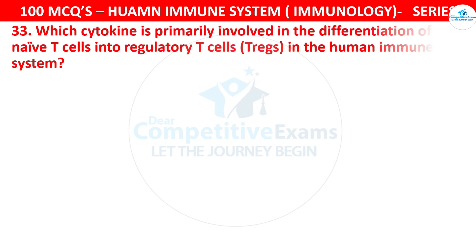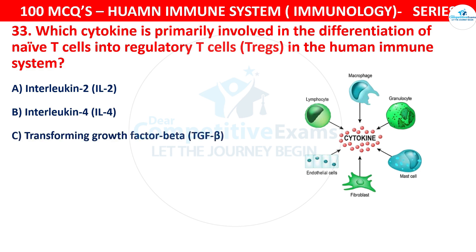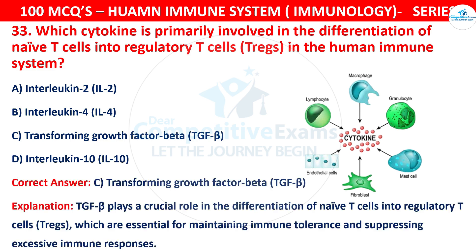Question 33: Which cytokine is primarily involved in the differentiation of naive T cells into Regulatory T cells in the human immune system? Your options are Interleukin-2, Interleukin-4, Transforming Growth Factor-Beta (TGF-β), or Interleukin-10. The correct answer is C, that is Transforming Growth Factor-Beta. TGF-β plays a crucial role in the differentiation of naive T cells into Regulatory T cells, which are essential for maintaining immune tolerance and suppressing excessive immune responses.